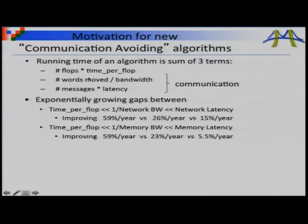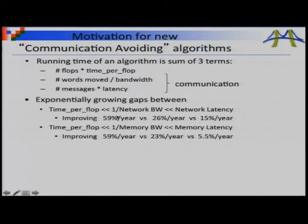Which of those three terms is most important? The coefficients — time per flop, reciprocal bandwidth, and latency — are orders of magnitude apart. It can cost hundreds or thousands of times as much as a flop to move one word or one message. They're all getting better, but at very different rates, growing apart exponentially. Time per flop improves at about 60% a year, but bandwidth only at around 28–30%, and latency only at 5–15% a year. So even if your algorithm isn't dominated by communication this year, it may be next year. We may be willing to use an algorithm that does more floating point operations because that's cheap compared to communication.